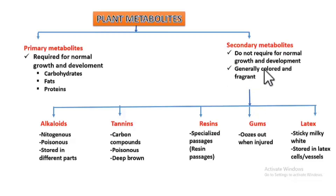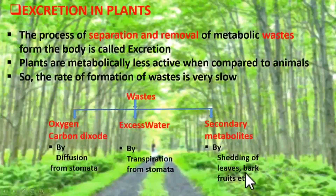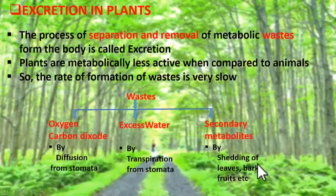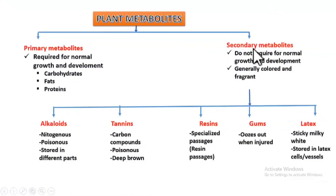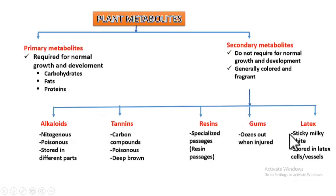Secondary metabolites are usually colored and fragrant. Plants store them in body parts like leaves, bark, fruits, and stems, and during excretion they shed off these parts. There are five types of secondary metabolites: alkaloids, tannins, resins, gums, and latex. Let us see their uses for plants and humans.